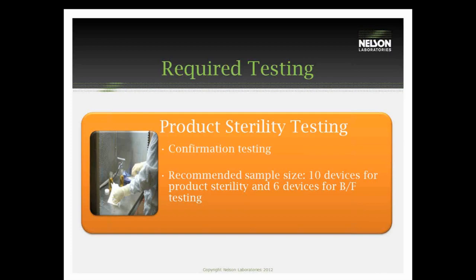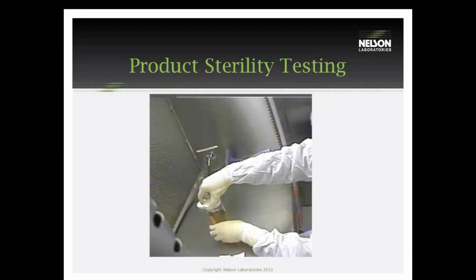Following the half cycle is when we would do the product sterility testing. This testing is confirmation testing and does not go towards clearing your devices as sterile. It just confirms that during the half cycle, the dwell time, concentration, and temperature exceeded the necessary requirements for the natural bioburden on the products. For this testing we recommend ten devices for product sterility and six devices for bacteriostasis/fungistasis testing. The bacteriostasis/fungistasis testing, or BF testing, is a necessary test to validate the product sterility results.